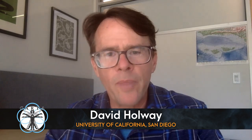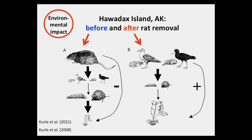The removal of rats from Hawadax Island led to the recolonization of the island by gulls and shorebirds. Those recolonists fed on grazing mollusks, which led to the restoration of rich algal communities in rocky intertidal habitats. So in this case, the birds had a positive indirect effect on algae in the rocky intertidal.